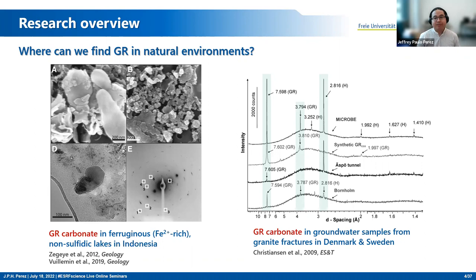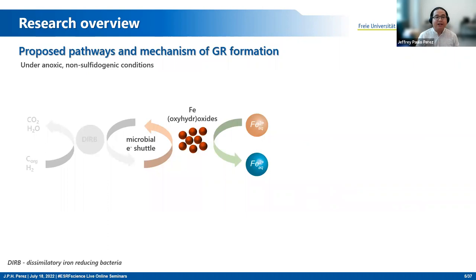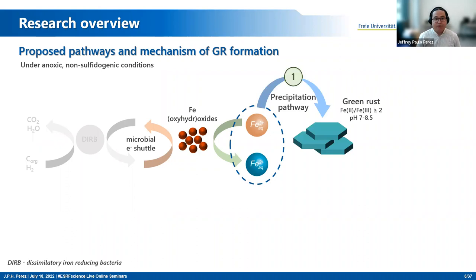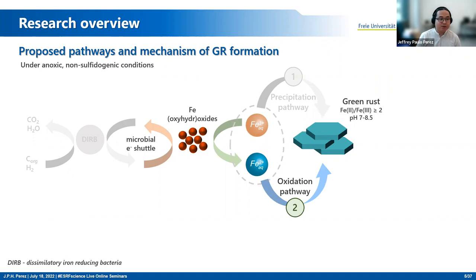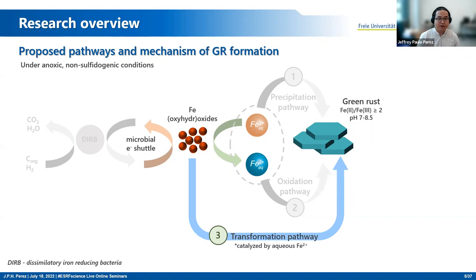How does green rust form in natural environments? There are many pathways. One of the possible pathways is through the precipitation pathway, which is the direct precipitation of green rust from dissolved iron(II) and iron(III). It needs to satisfy a specific iron ratio — iron(II) to iron(III) should be greater than or equal to two — and it should be at circumneutral pH. It is also possible to form green rust through direct oxidation of dissolved iron(II), or through the transformation of poorly ordered iron oxyhydroxides such as ferrihydrite or Schwertmannite, a process often catalyzed by dissolved iron(II).